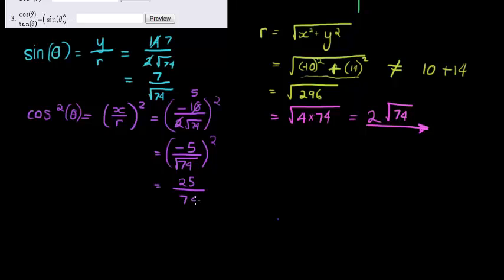Next question, we have this long one. That is cos of theta, which we just had here, that's negative 5 over square root of 74, divided by tan of theta. We haven't done tan of theta yet. And minus sine of theta.